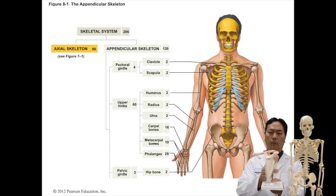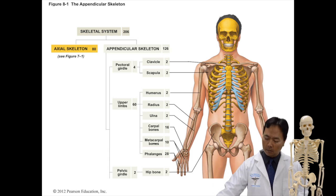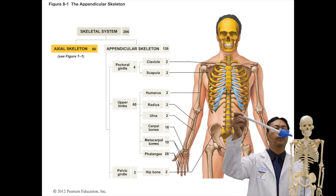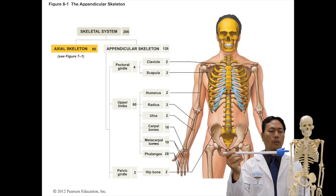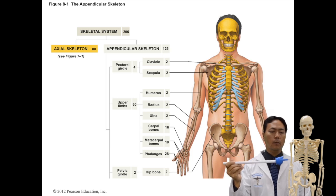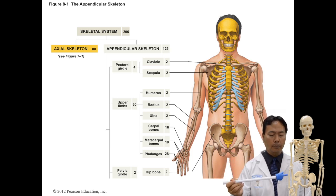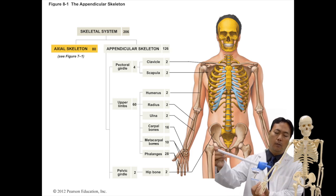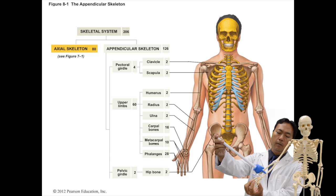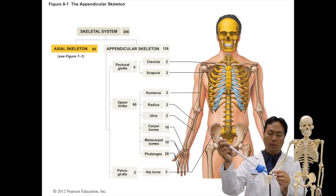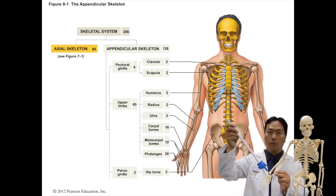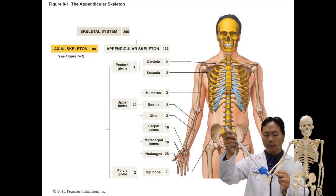Here we have a picture of the appendicular skeleton. Starting from the top, you have the clavicle, which is your collarbone. The scapula is your shoulder blade. The humerus is your upper arm bone, where the biceps inserts. The radius is the lateral forearm bone, which inserts to your thumb. The ulna is the medial forearm bone, which inserts to the elbow and extends distally to become the pinky side. The carpals are eight bones with proximal and distal rows — a total of eight short wrist bones.